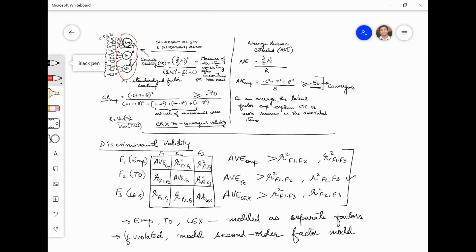If we are not getting that discriminant validity with the traditional method and we are using let's say HTMT or other method, and we are getting that time the discriminant validity, should we go ahead with the HTMT? Yes, absolutely. And in that case, should we go for second order modeling as well? If you are getting discriminant, then there is no need.